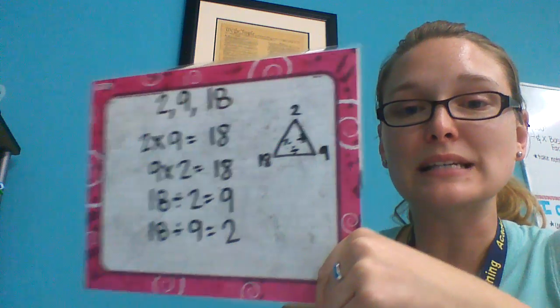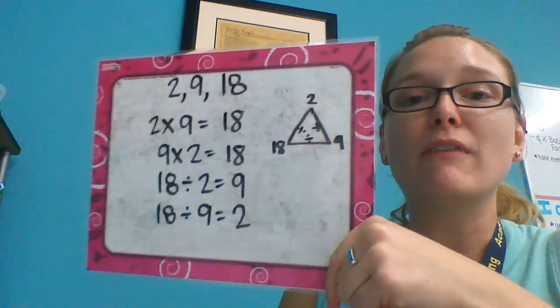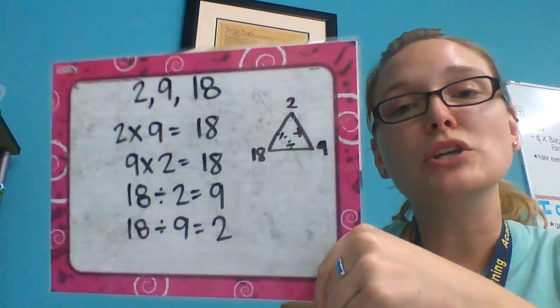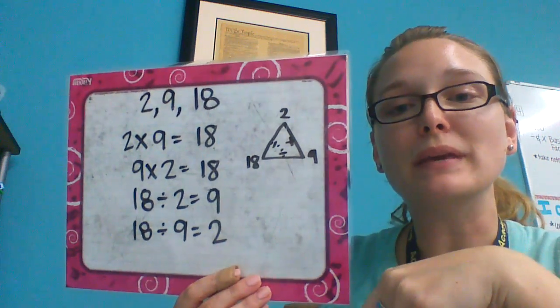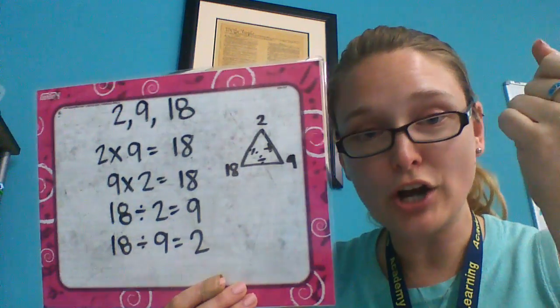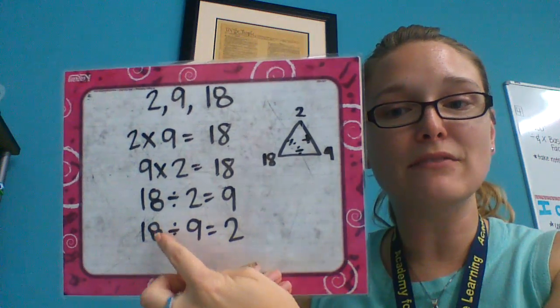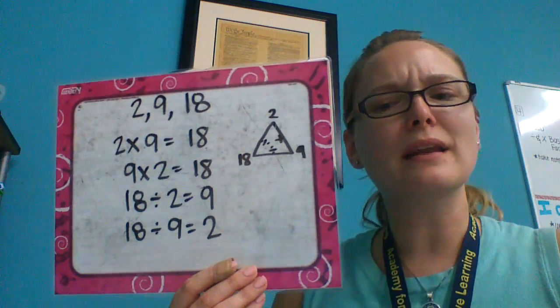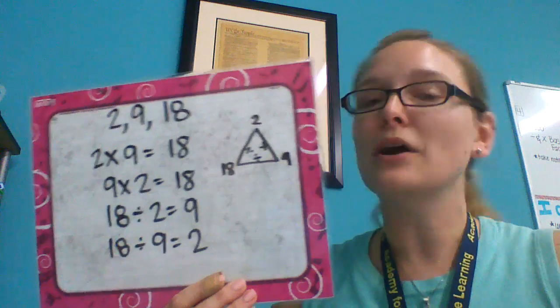Multiplication and division, because this is a fact family. If I know my fact family, I can use that information to help me solve a division problem. If I know 2 times 9 equals 18 by heart, then when I see 18 divided by 9, I can think 9 times what makes 18? Oh yeah, 2.